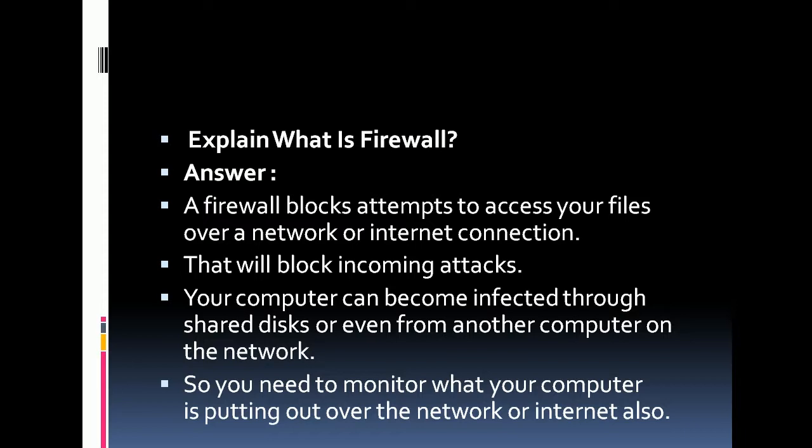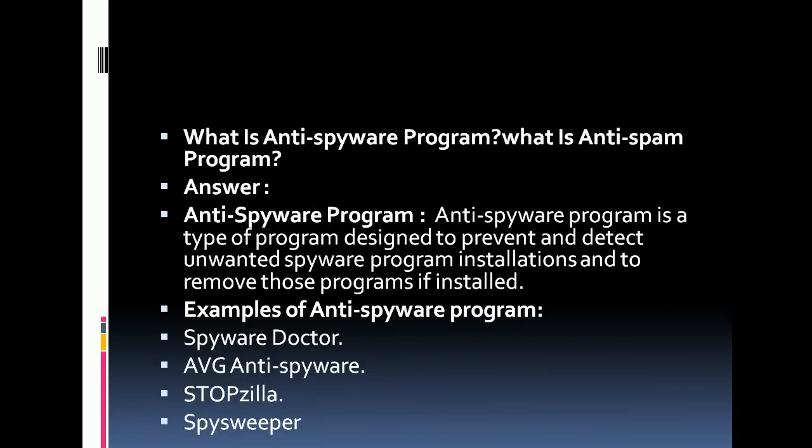What is a firewall? A firewall comes in two types: software and hardware. Here we will see only the definition. A firewall blocks attempts to access your files over a network or internet connection. Keep the firewall turned on at all times when using the internet so it can block incoming attacks. Your computer can also become infected through shared disks or other computers on the network, so monitor what your computer is sending out to the network or internet.